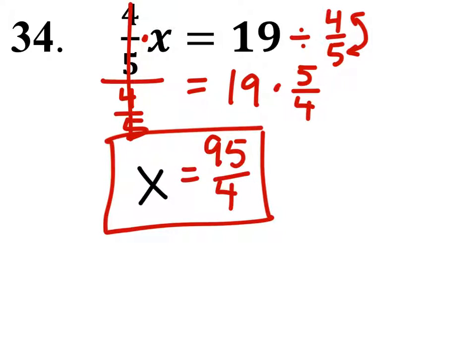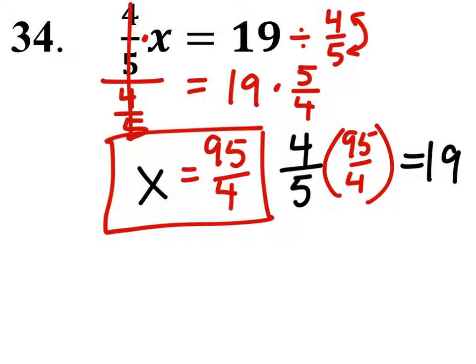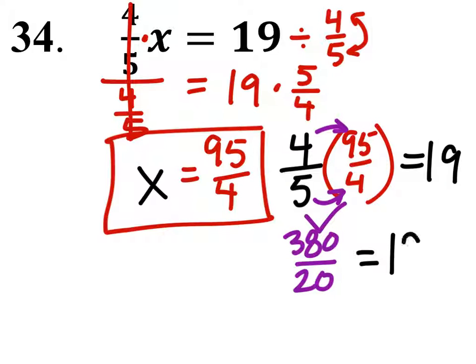Well, to check this, we'll rewrite the equation. So I've replaced the x with 95/4. And when we multiply these, you got 4 times 95 and 5 times 4, and this should equal 19.